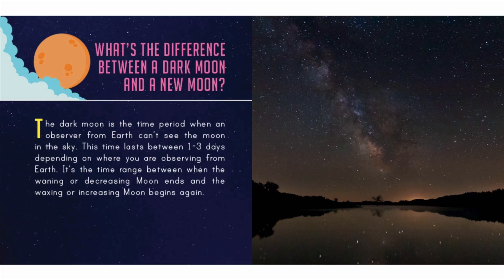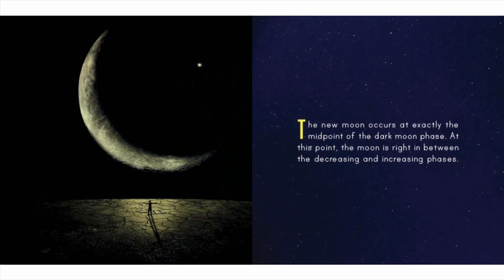The dark moon is the time period when an observer from earth can't see the moon in the sky. This lasts between one to three days depending on where you are observing from earth — it's the time range between when the waning or decreasing moon ends and the waxing or increasing moon begins again. The new moon occurs at exactly the midpoint of the dark moon phase, at the point right in between the decreasing and increasing phases.